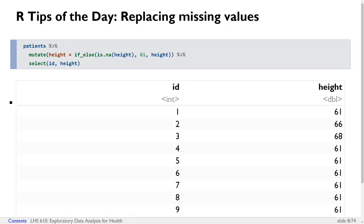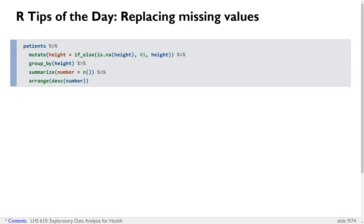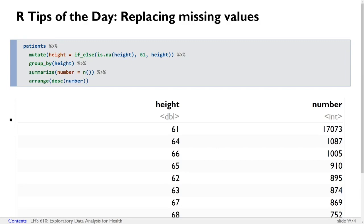If we do that, notice that all of the values that were previously missing for height have now been filled in with a value of 61. And if we fill those missing values and then group by height and count up values using summarize number equals N, then arrange in descending order, you'll notice that 61 is now the most common value for height — there are actually 17,000 people with a value of 61, because there were already some people with 61 and all the missing values also now have a height of 61.